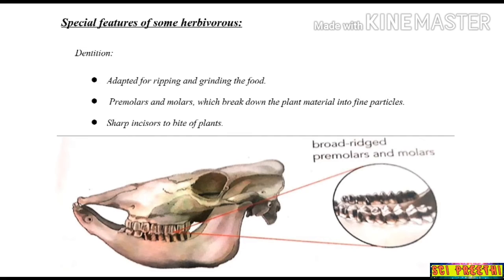Now we will see the special features of herbivorous animals, starting with dentition. Dentition means the arrangement or condition of the teeth in a particular species. The teeth are adapted for gripping and grinding food. They have premolars and molars which are used to break down plant material into fine particles. In the picture, you can clearly see the premolar and molar teeth — they have flat, broad surfaces with many folds, used to grind plant material easily. They also have sharp incisors to bite off plants, present at the front of the mouth.